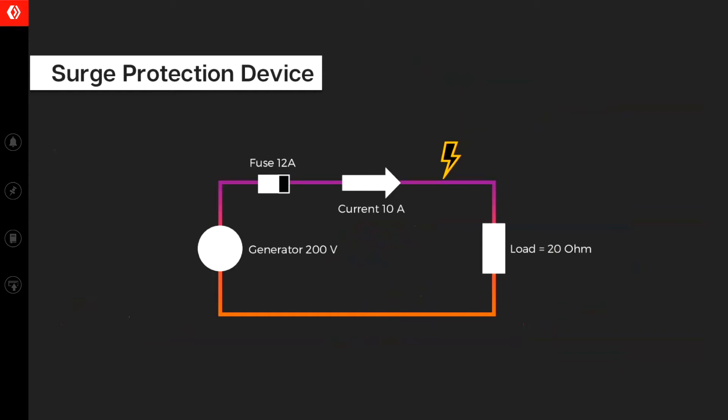To understand what is surge protection, consider again a simple circuit. In this circuit, we have the same condition wherein we have our equipment generator 200 volts and a circuit which is carrying 10 ampere of current.